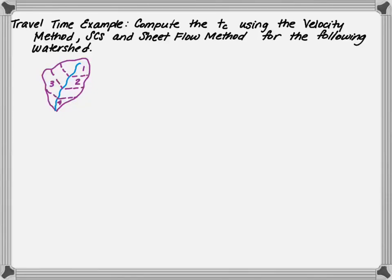The purpose of this video is to provide you with an example of how to calculate travel time. In this example you'll learn how to calculate travel time using the velocity method, SCS method, and sheet flow method for a watershed that is made up of four different land usages and areas.